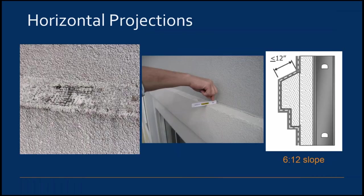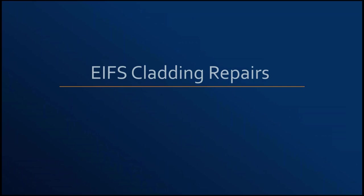Many EIFS claddings utilize projections to add depth and profile to the facade. If the skyward face of those projections is not designed and installed properly with a 6-in-12 slope, water sheeting down the face of the cladding can accumulate at these areas, resulting in biological growth, erosion of the lamina exposing the reinforcing mesh, or exploiting cracking at these locations causing water infiltration.